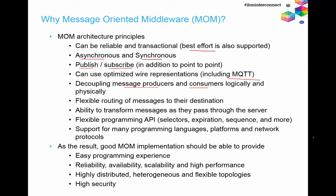Another benefit of messaging is the ability to transform messages as they pass through the server. You can use messaging connected to the app server and transform those messages inside the application server, inside the ESB, or a client could pick up messages, transform them, and put them back on the server. The programming APIs for messaging could also be quite flexible, including selectors for messages, expiration, picking up messages in sequence, and the ability to define priorities — first in, first out; first in, last out. This is very powerful and difficult to replicate with other communication paradigms.